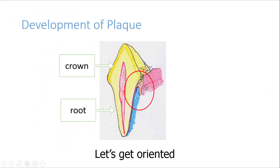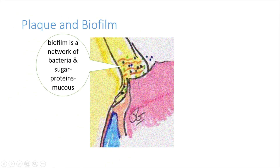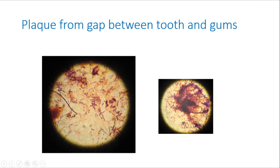Now let's talk about plaque. The area that we are interested in is within that red oval. Plaque is made of bacteria and it builds up on the crown and reaches below the gum line into the sulcus. The protein sugars from the saliva mix with the plaque and in 1-2 days this is a really stable network called biofilm. This is what the plaque looks like under the microscope — the dots and dashes of bacteria, and there are billions of these in the mouth and they like to stick onto the crown surfaces.